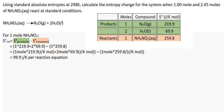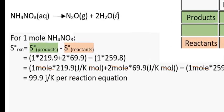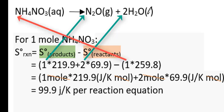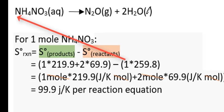So let's take a look at what the setup is. We're going to use the equation S reaction equals S products minus S reactants. We have 1 mole of N₂O, so I put a 1 in front of the 219, and I put a 2 in front of the 69.9 because there's 2 moles of water in the equation as given. Subtract the 1 mole of ammonium nitrate, so 1 times 259.8.